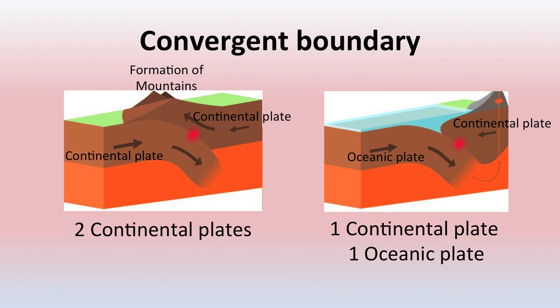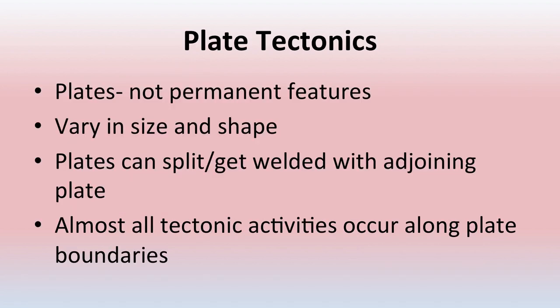At a convergent plate boundary, the denser plate subsides down under the lighter continental plate — one goes down and one glides over it. Different types of convergent plate boundaries include oceanic-oceanic and oceanic-continental. Transform plate boundaries are where the plates slide past each other parallel — there is no subduction, they just slide past in this manner, so it is known as a zone of preservation. Plates are not permanent features — they vary in shape and size, split, and join together as tectonic activities occur.